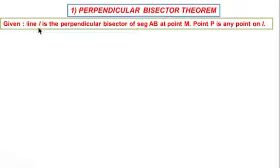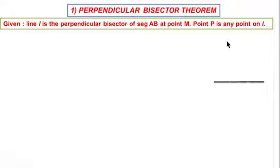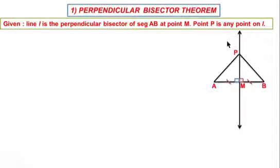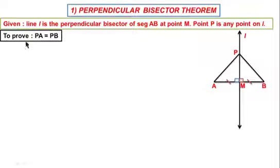Given: Line L is the perpendicular bisector of segment AB at point M. Point P is any point on line L. See this figure. Line L is the perpendicular bisector of segment AB, and therefore segment AM and segment BM are congruent.